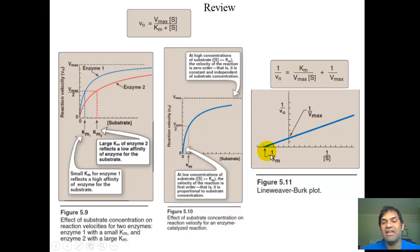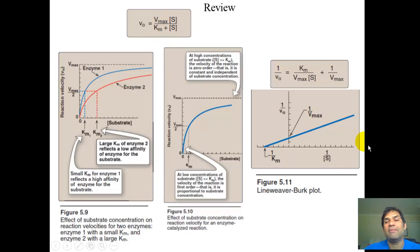To get the true Vmax, take the reciprocal of the y-intercept. To get the true Km, take the negative reciprocal of the x-intercept. This is the Michaelis-Menten equation, and the Lineweaver-Burk linear transform makes it easy to extract Vmax and Km.